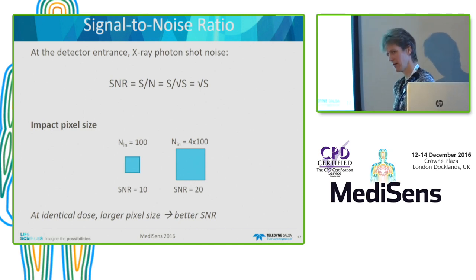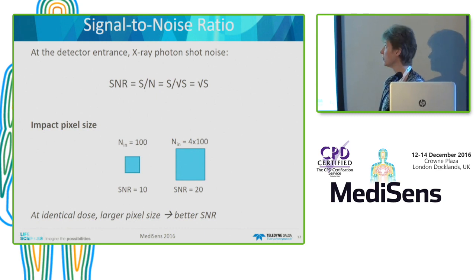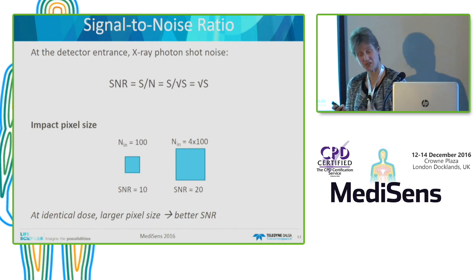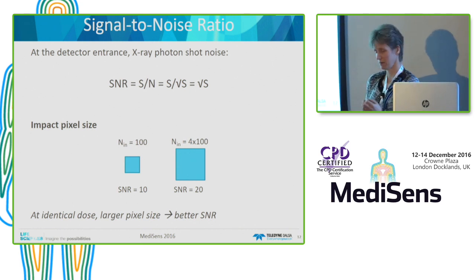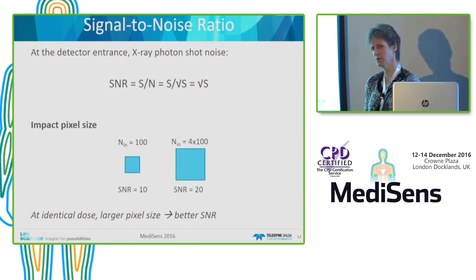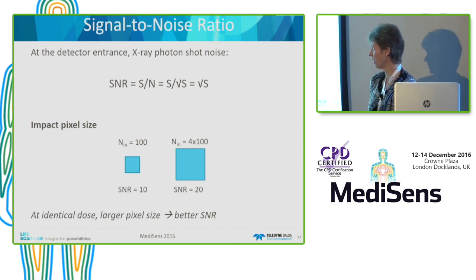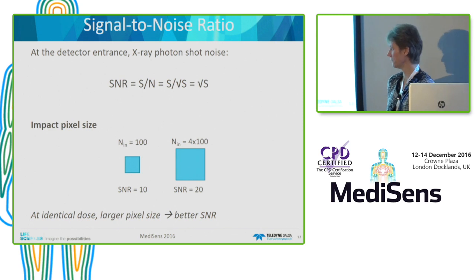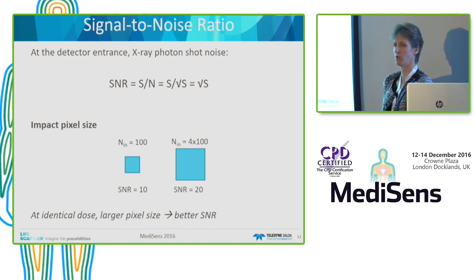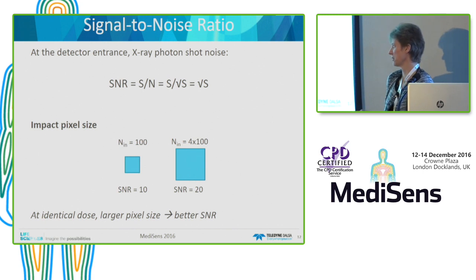Another aspect of image quality is the signal-to-noise ratio. Taking the statistical photon shot noise into account, the SNR of the incoming image on your detector is the square root of the signal. This means that if we change the pixel size, the SNR will change as well. For a small pixel where 100 photons come in, the SNR will be 10. If we bin or make the pixel twice as large in both directions, four times more photons come in, and the SNR will be 20. So at identical dose, the expectation is that the larger the pixel size, the better the SNR performance.